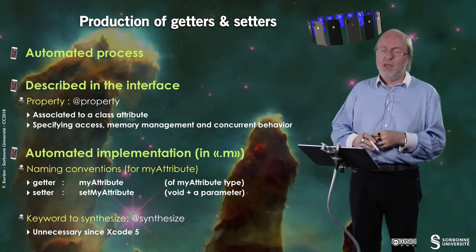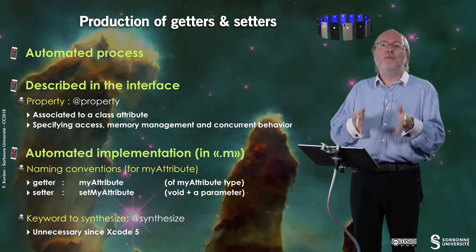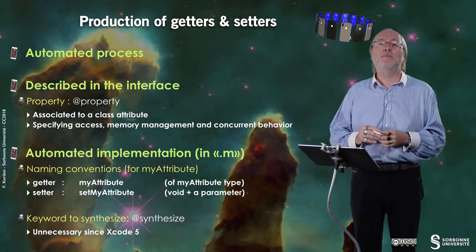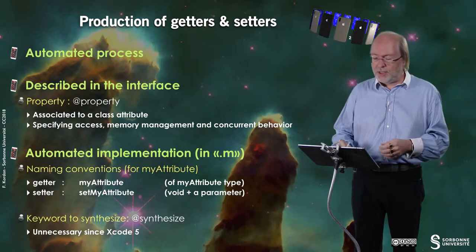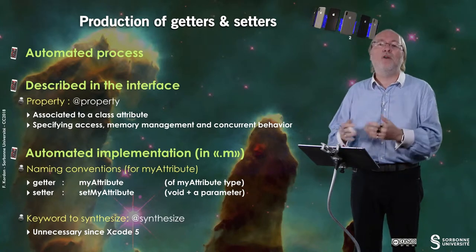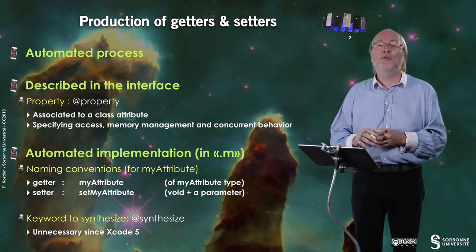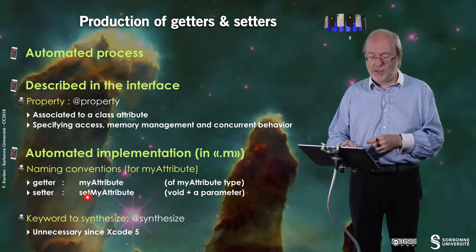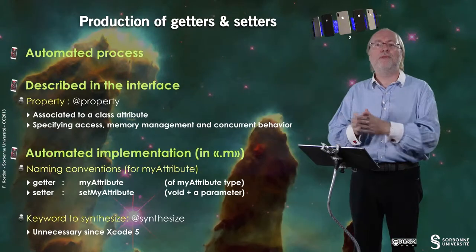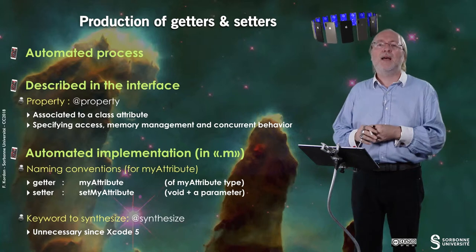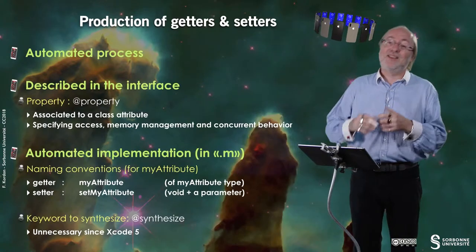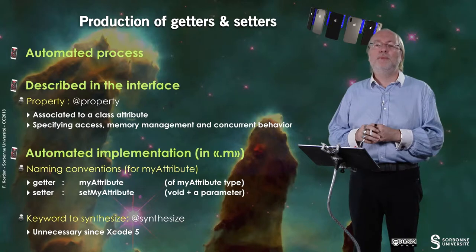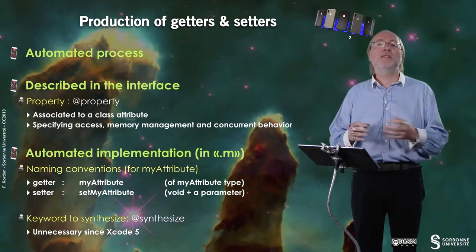There are naming conventions that allow you, from the name of an attribute — let's imagine the attribute is called 'byAttribute' — to know that the getter will have the name of the property, and the setter by default will be 'setByAttribute' with a capital letter for the first letter of the identifier. There is a keyword to synthesize these getters and setters: it was @synthesize, but it's not necessary anymore since Xcode 5. You can put it, it doesn't matter — if you omit it, the getters and setters will be generated anyway.